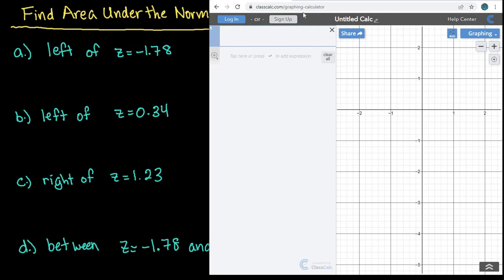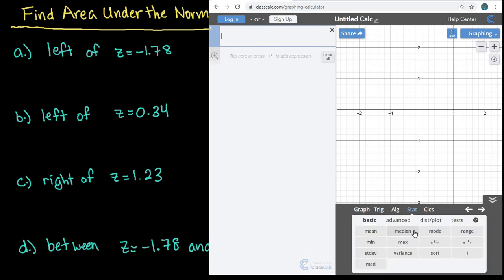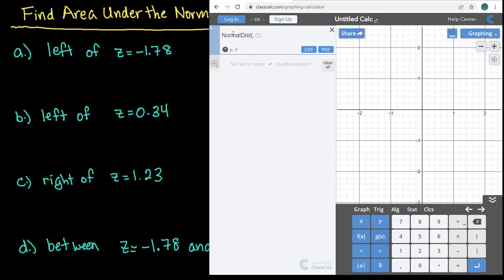So when you come to ClassCalc.com/graphing calculator, you're going to use the up arrow to pull up your menu choices and we're going to go to the statistics menu. Under the statistics menu we're going to go to distributions or plots, and we're going to go to the normal distribution.